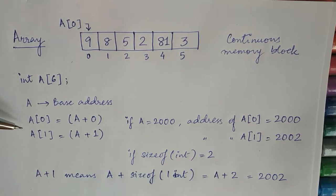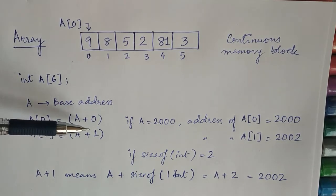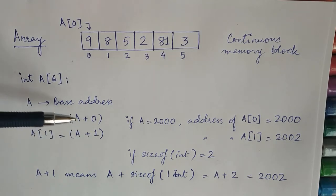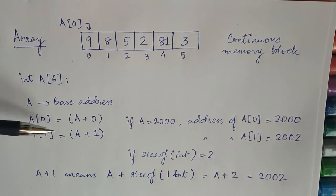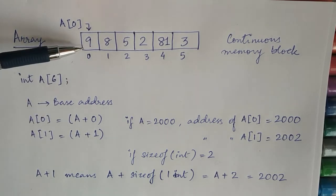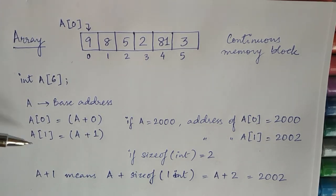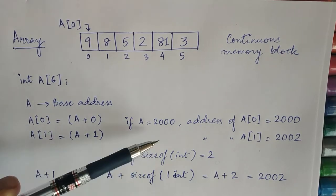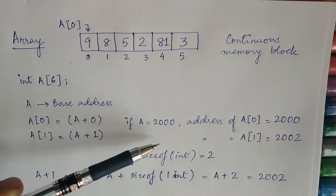So you know when we say int A[6], A is the base address of the array. And when you write A[0] which specifies the first element, it is actually base address plus 0. If your base address is 2000, you are doing 2000 plus 1.